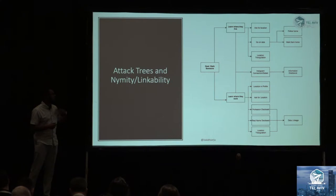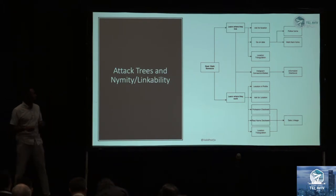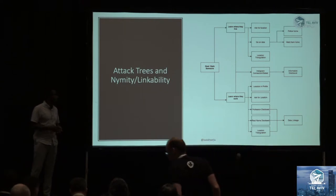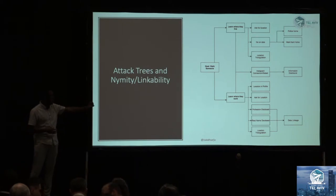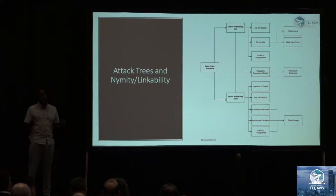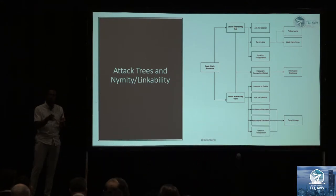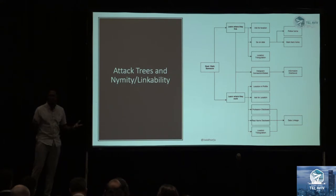Let's say I don't want to be stalked — most people don't. I want to think maliciously, like I was the evil doer trying to stalk me. Their goal could be to stalk me, and they have sub-goals to get there. Maybe they want to know where I live — we match on Tinder and they go, what's your home address? That probably won't get them very far. What I want to focus on is identifying where people potentially work. If we look at the goal of stalking someone, to learn where they work — maybe they put it straight in their profile, or they could just ask. But then this idea of nimity and linkability comes in — you can take bits of partially disclosed information and put them together to learn your objective.